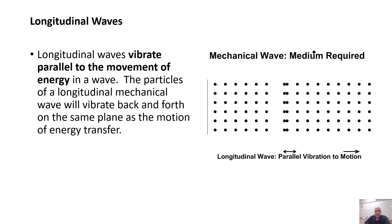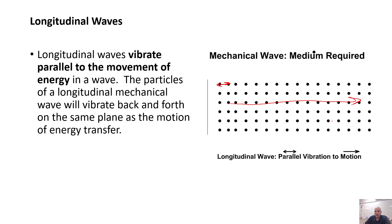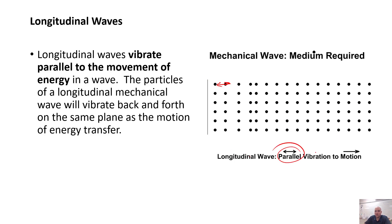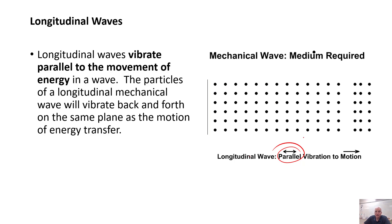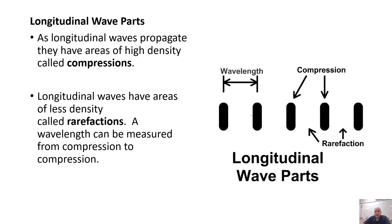Longitudinal waves — notice how the medium goes forward and then back. The vibration is parallel — back and forth — while the energy actually travels forward. So the vibration is parallel to the motion of the wave. The parts of a longitudinal wave: we have a wavelength between compressions, which are areas of more density, and rarefactions, which are areas of less density.